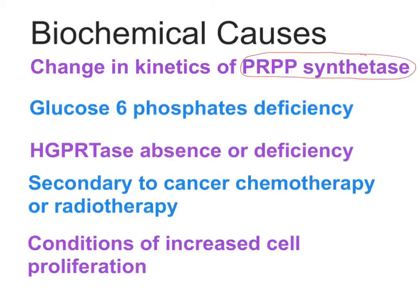If there is a lowering of KM of PRPP synthetase, there will be more and more PRPP synthesized from ribose-5-phosphate. Or if there is an increase in Vmax of PRPP synthetase, a lot of PRPP synthesis can occur, which acts positively on purine biosynthesis. More and more purines are synthesized, and the end product of purines is uric acid. So uric acid levels increase, leading to hyperuricemia, which can be a cause for gout.